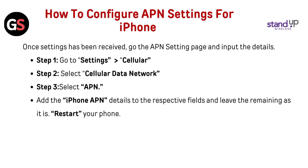Once the setting has been received, go to the APN settings page and input the details. Step 1: Go to Settings, then Cellular. Step 2: Select Cellular Data Network. Step 3: Select APN. Add the iPhone APN details to the respective fields and leave the remaining as they are.